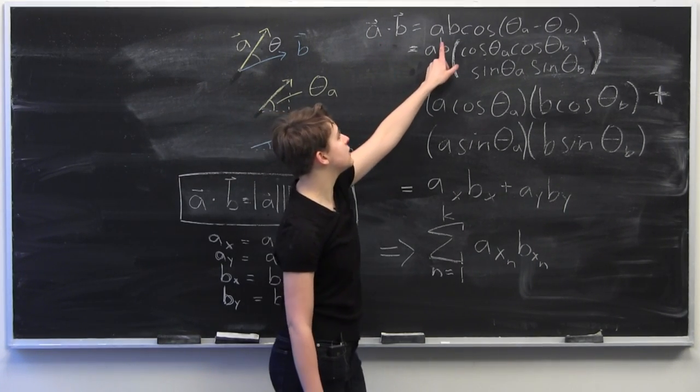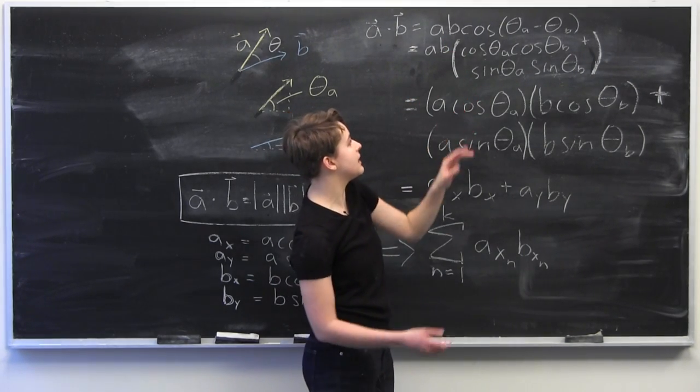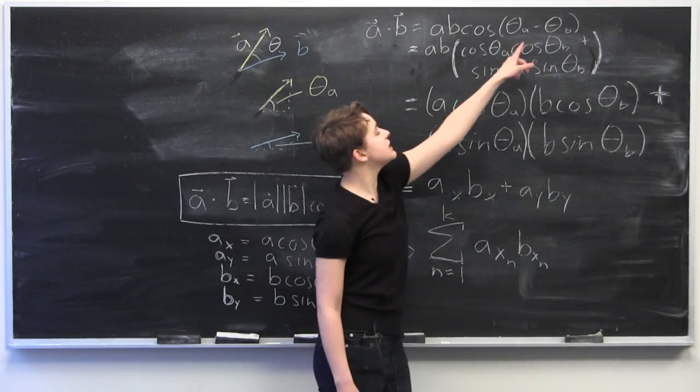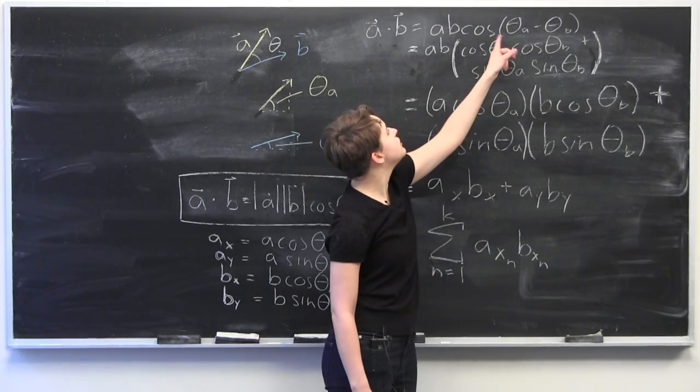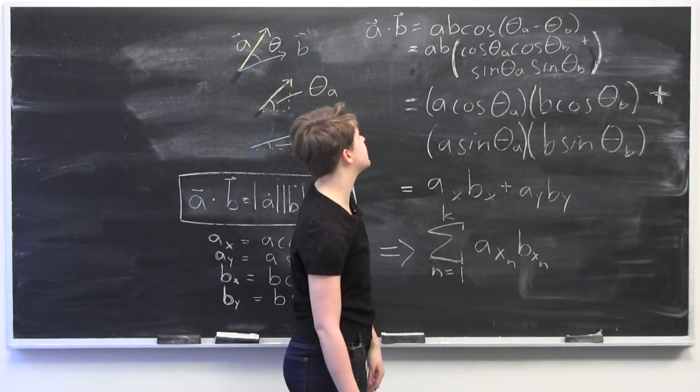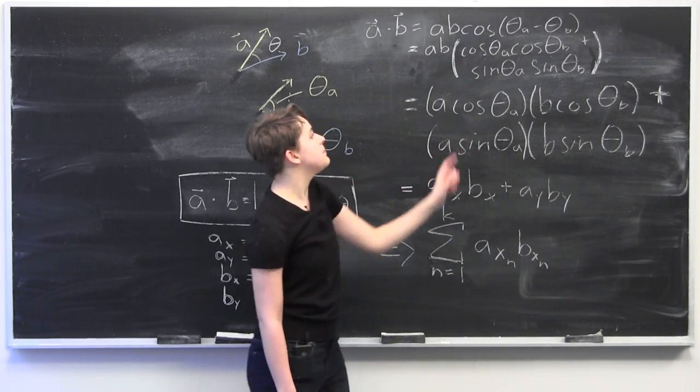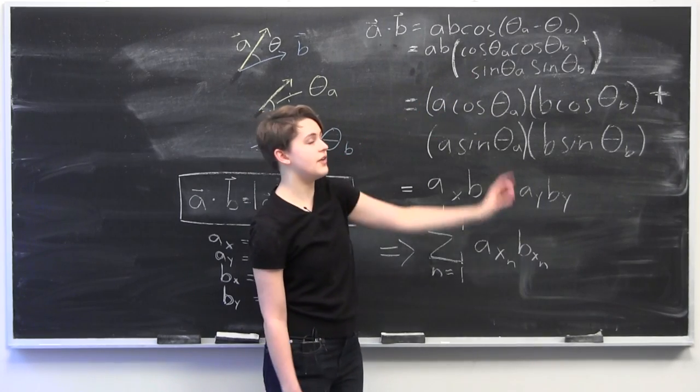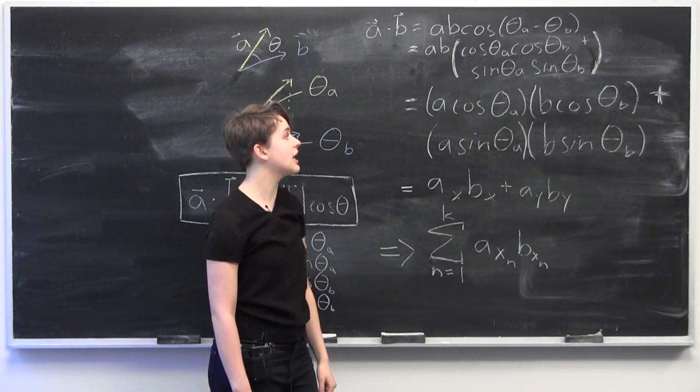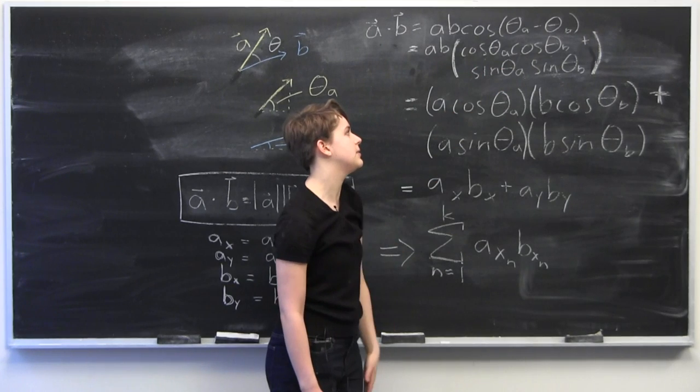So a·b is equal to a times b times cosine of theta_a minus theta_b. Using the definition of the difference of angles here, we can expand this out to be a times b times quantity, cosine of theta_a cosine of theta_b plus sine of theta_a sine of theta_b.